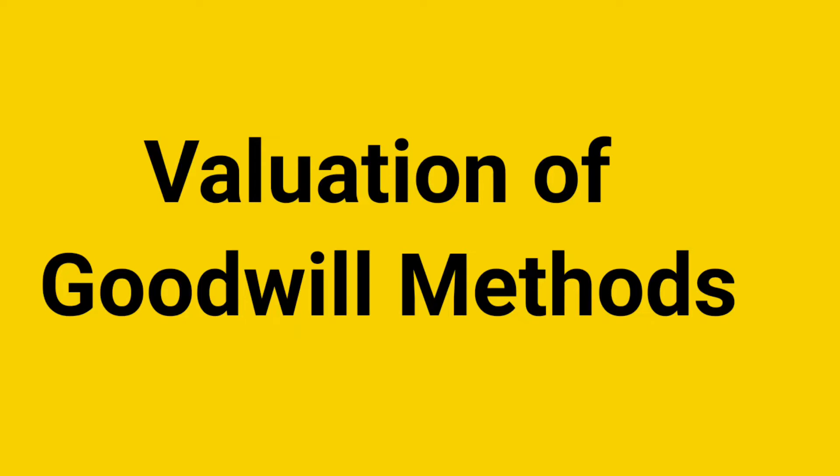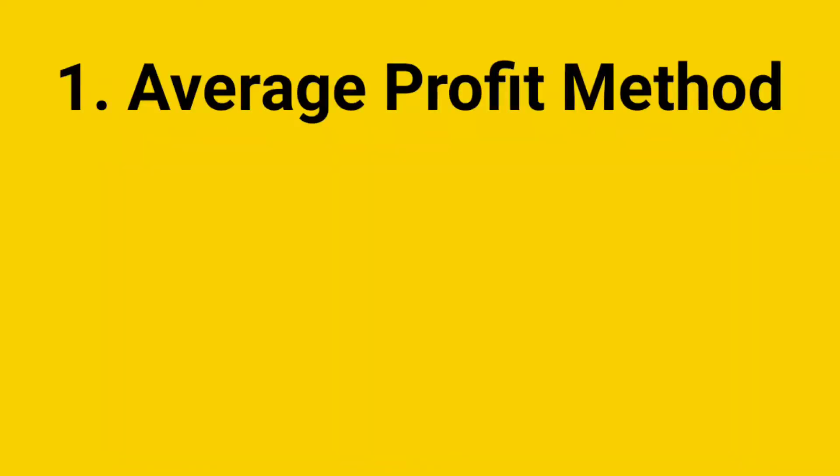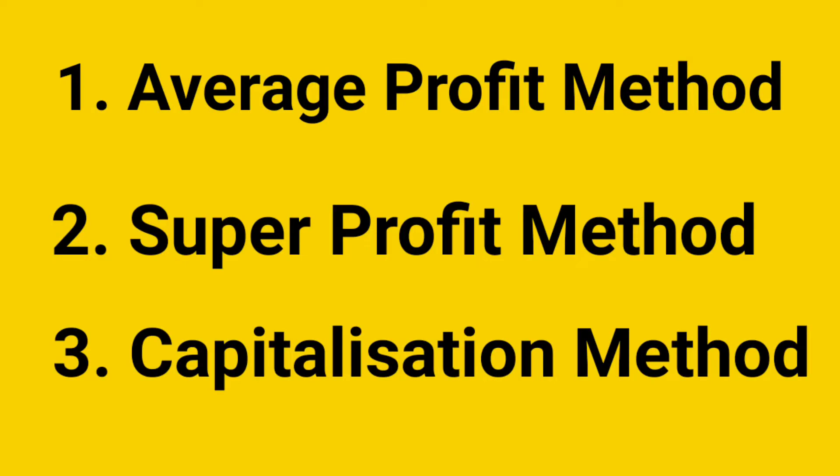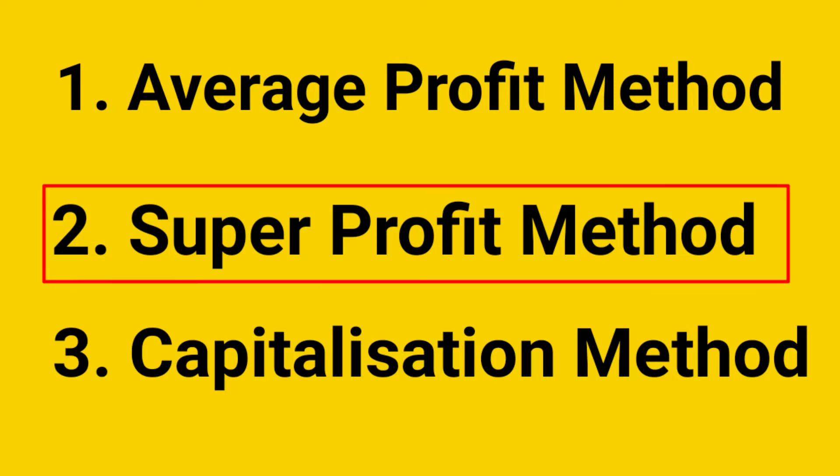There are three types of methods to calculate goodwill. One is the Average Profit Method, two is the Super Profit Method, and three is the Capitalization Method. Of these three, the Super Profit Method is the most important.